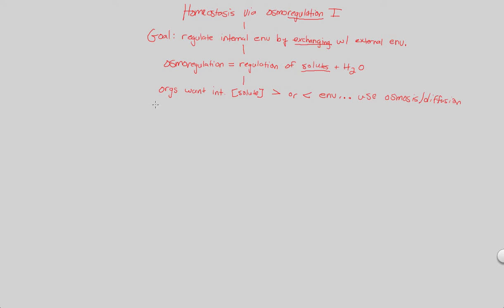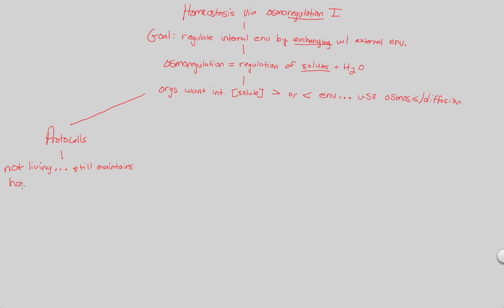We'll first look at something not even living that still exhibits a homeostatic mechanism like osmoregulation: protocells. Protocells are not technically alive because they lack replicative capabilities, but they still exhibit homeostasis. This emphasizes how common and strongly homeostasis appears as a theme in biology — even in non-living systems. Protocells still maintain homeostasis via osmoregulation.